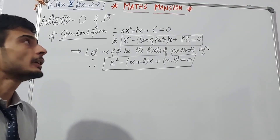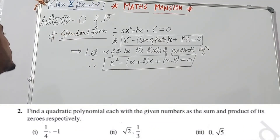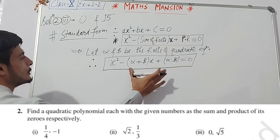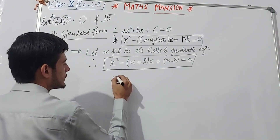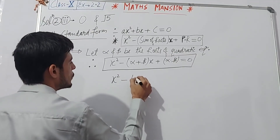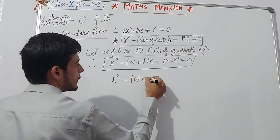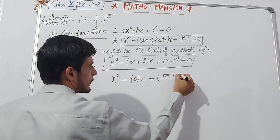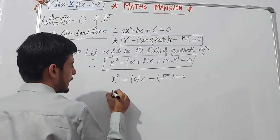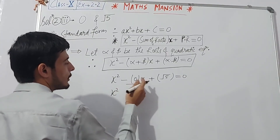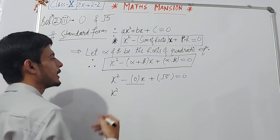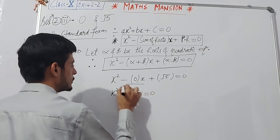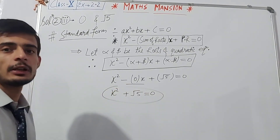In part 3, we are given the sum of roots as 0 and the product of roots as √5. Putting these values in the equation, we get x² − (0)·x + √5 = 0. The middle term becomes 0 after multiplying by 0, so we are left with x² + √5 = 0. This is our final answer.